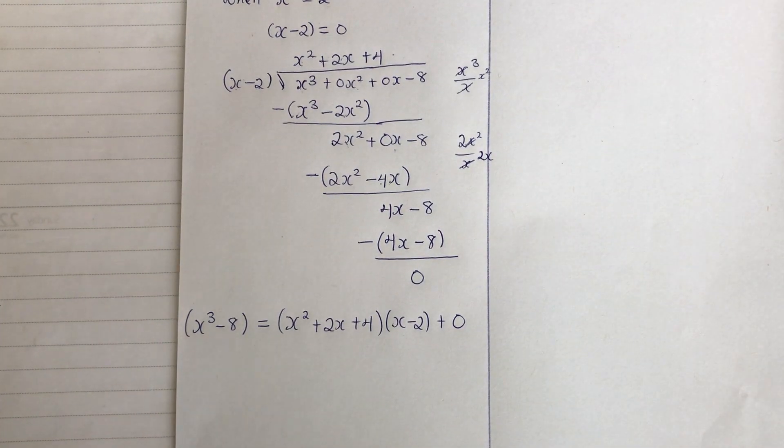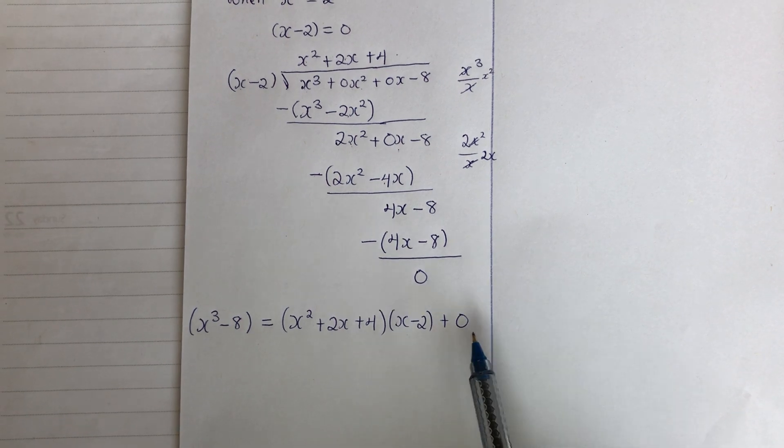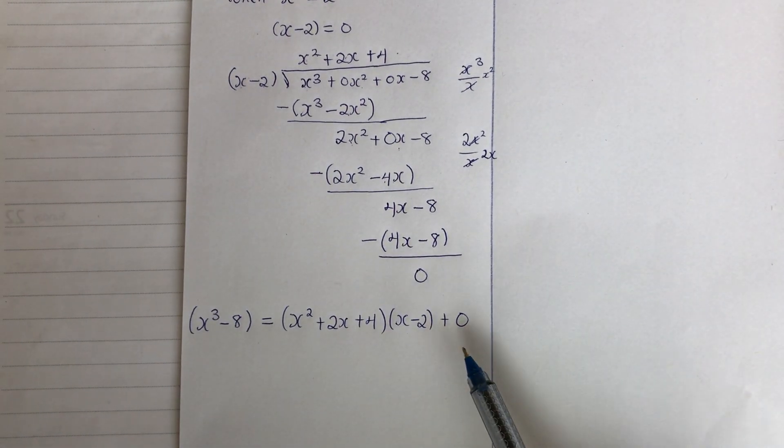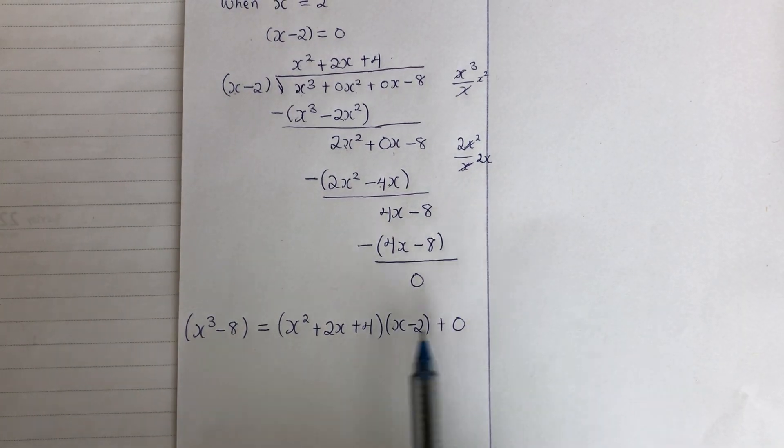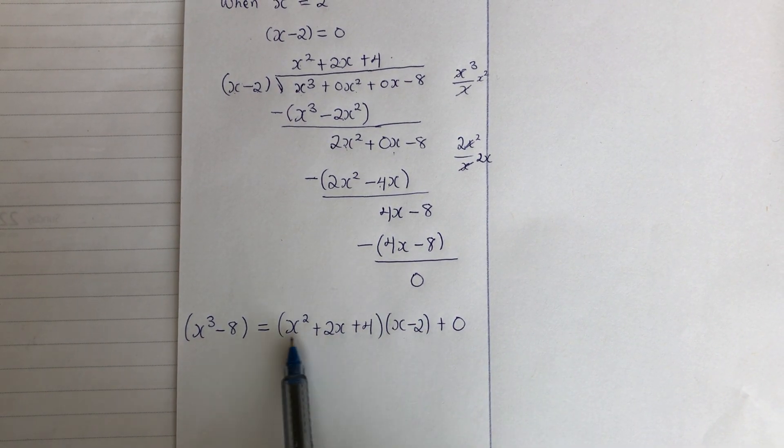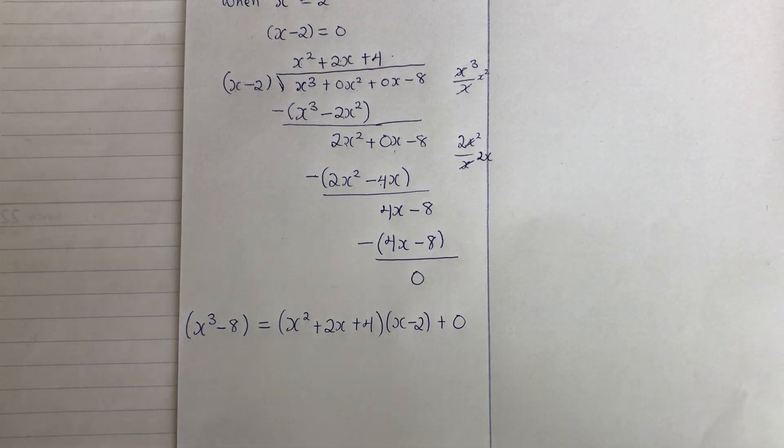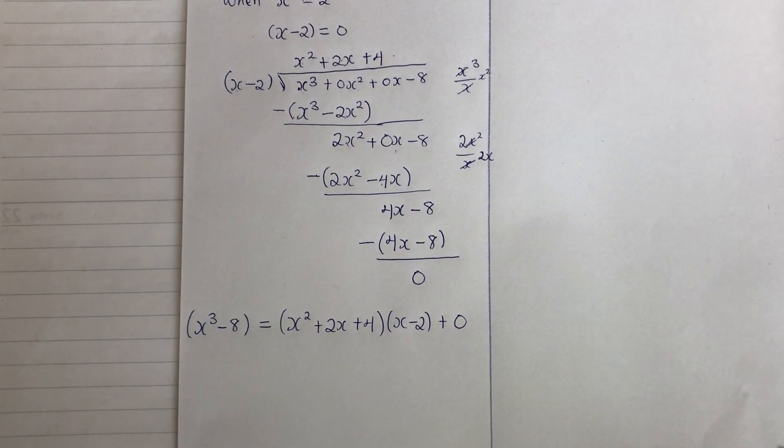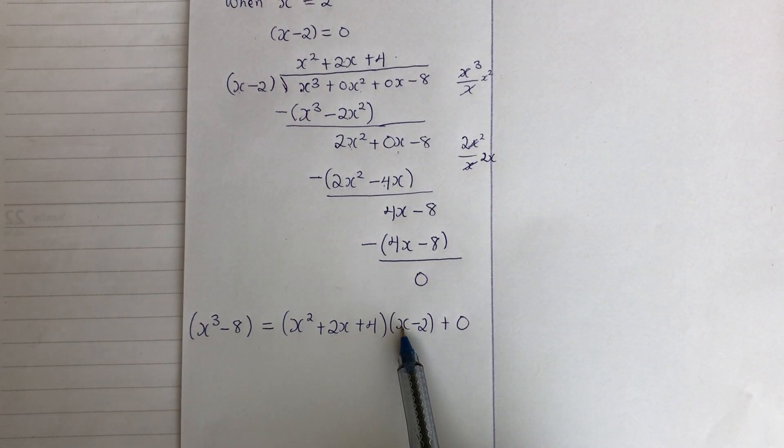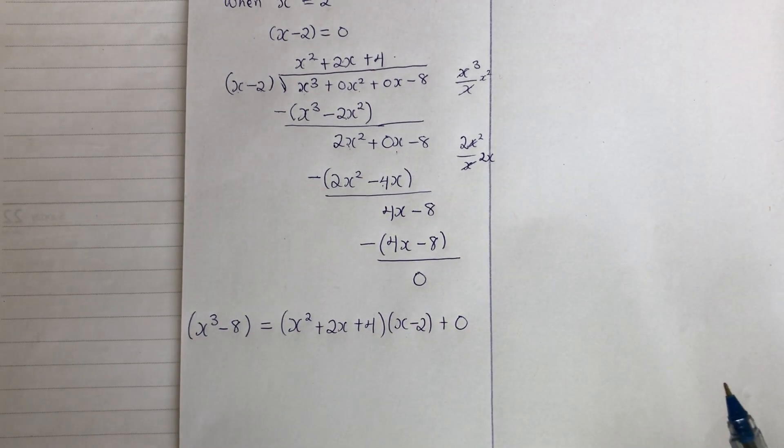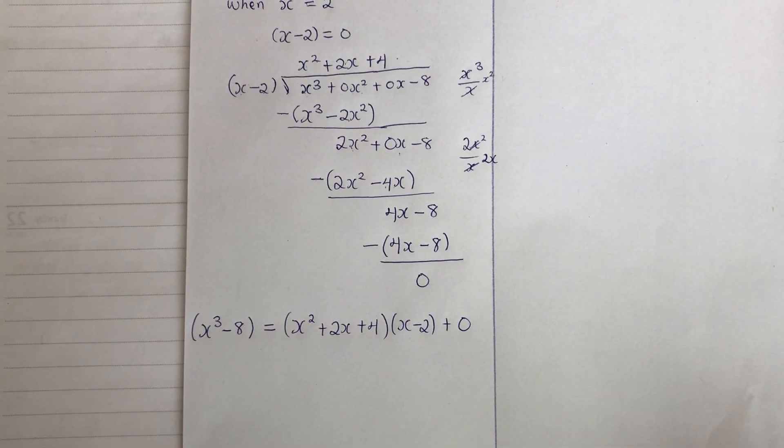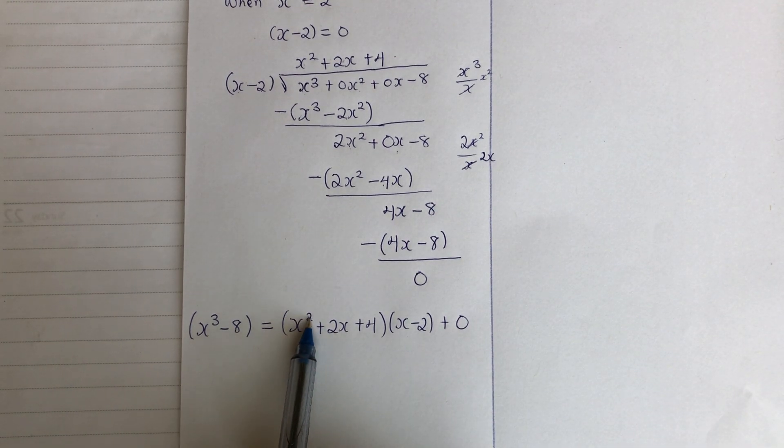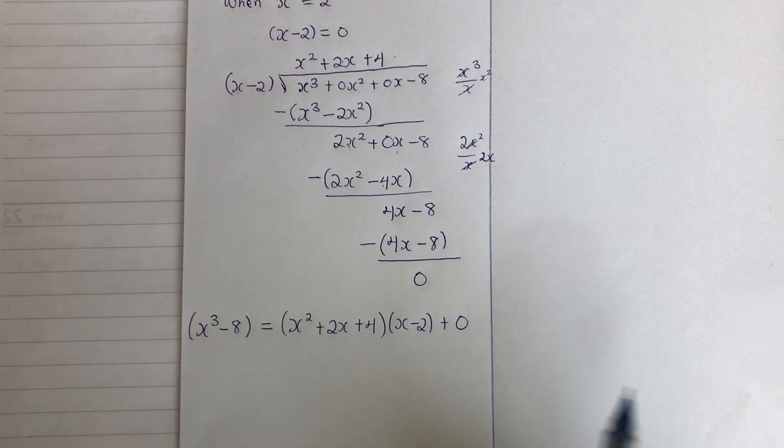Remember that it is not always that the remainder will be 0. It is because of this example. That is why we are getting this. Now, if I equate whatever result I have here to 0, I should be able to find the root of the equation. But watch carefully. I have x minus 2 here. When I equate it to 0, I can find the value of x.